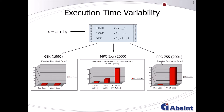Going to a more complex architecture like the PowerPC 755, you might have much higher variability between best and worst case scenarios. It is not feasible to always assume the absolute worst case for every individual instruction, because this would end up with a huge overestimation which is not acceptable.